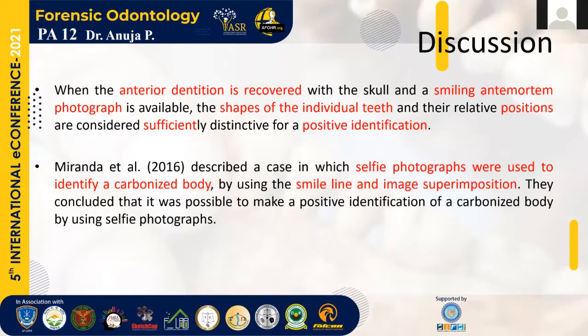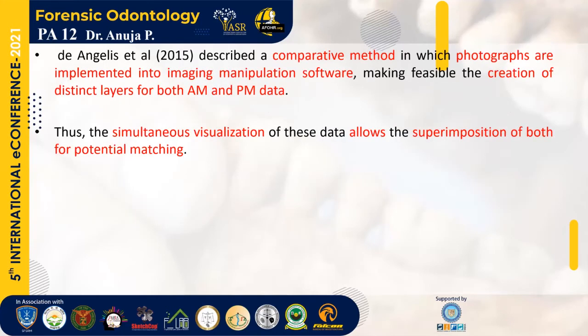When the anterior dentition is recovered with the skull and a smiling ante-mortem photograph is available, the shapes of the individual teeth and their relative positions are considered sufficiently distinctive for a positive identification. Miranda et al. in 2016 described a case in which selfie photographs were used to identify a carbonized body by using the smile line and image superimposition, proving that even a selfie can aid in identifying humans. Another study described a comparative method in which photographs are implemented into imaging manipulation software, making it feasible to create distinct layers for both ante-mortem and post-mortem data, allowing simultaneous visualization and superimposition for potential matching.